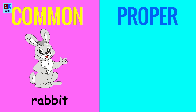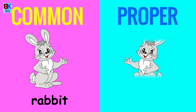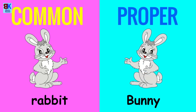A rabbit is a common noun because it's a general name given to an animal. However, when we give this rabbit a name — Bunny — it is specific to that particular rabbit. So, it is a proper noun.